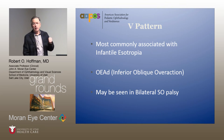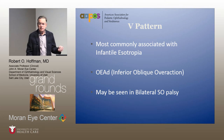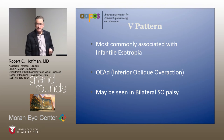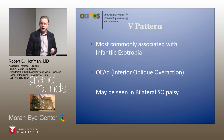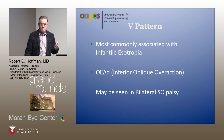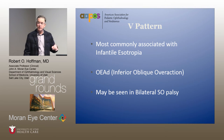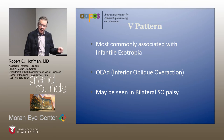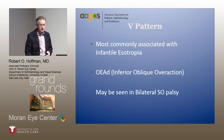V patterns are the most common type of pattern seen, most commonly associated with infantile esotropia. In infantile esotropia, there are three things that go along with that: one of them is a V pattern with inferior oblique overaction, the other is latent nystagmus, and the other is dissociated vertical deviation.